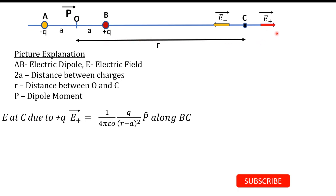Here we write (r−a)² instead of r², because we need the distance BC. Since r is the distance OC and BC equals OC minus OB, we get BC = r − a. So the denominator is (r−a)², and E-plus is directed along BC.